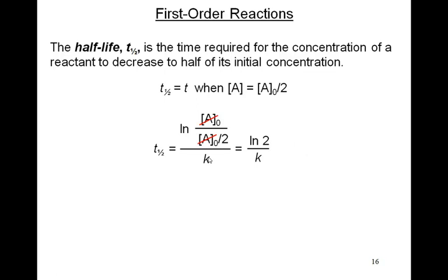The natural log of 2 equals 0.693. So the half-life for a first-order reaction — the time it takes for the concentration of the reactant to decrease to half its original concentration — is equal to 0.693 divided by K. The half-life for this type of reaction is only dependent upon the value of K, not the initial concentration. So it doesn't matter how much of the initial concentration you start with; the half-life will be the same regardless.